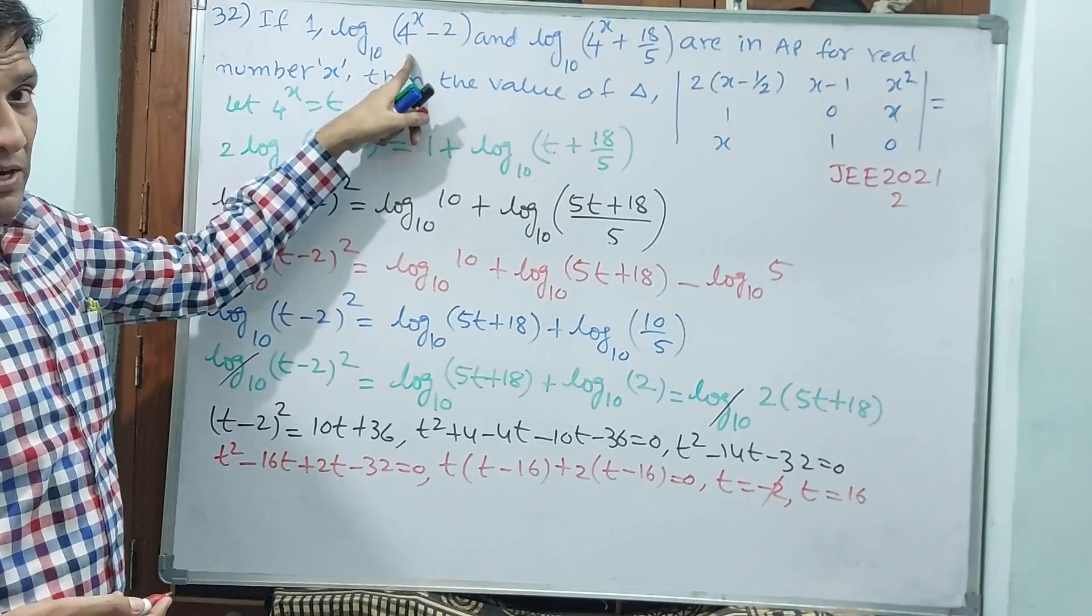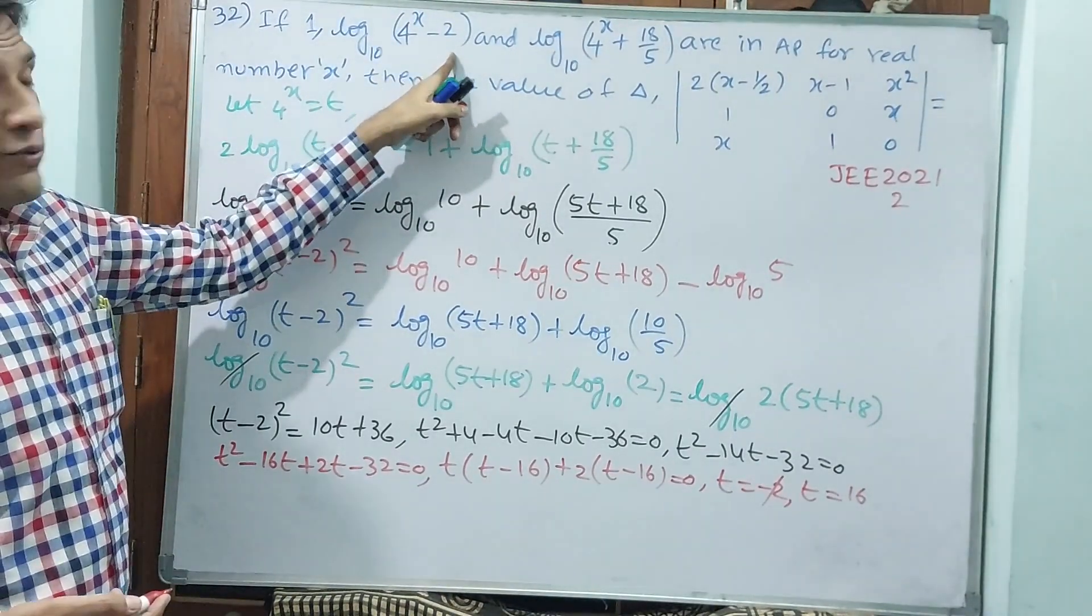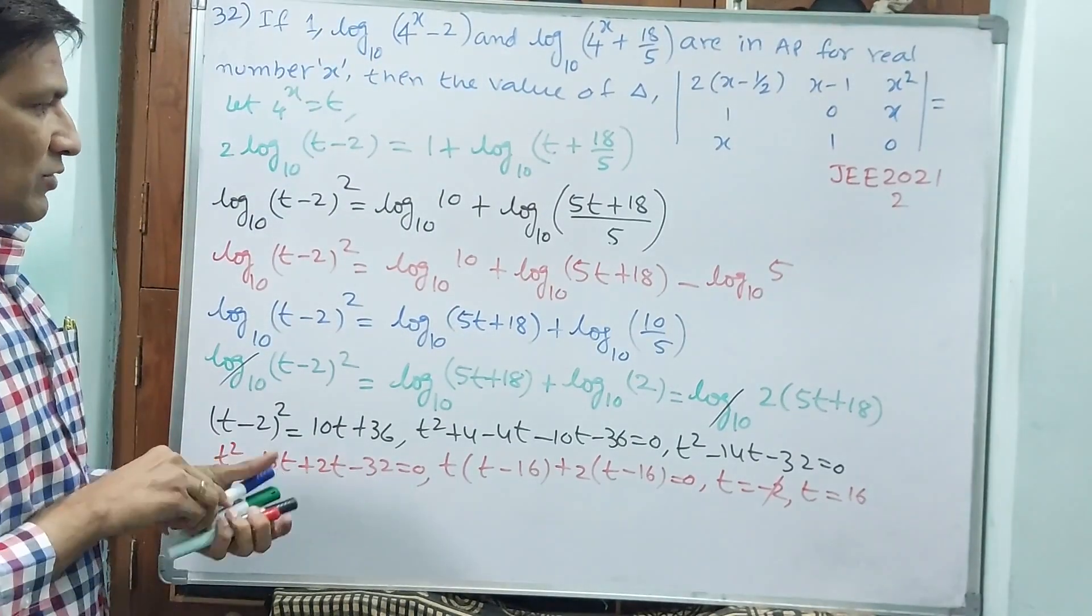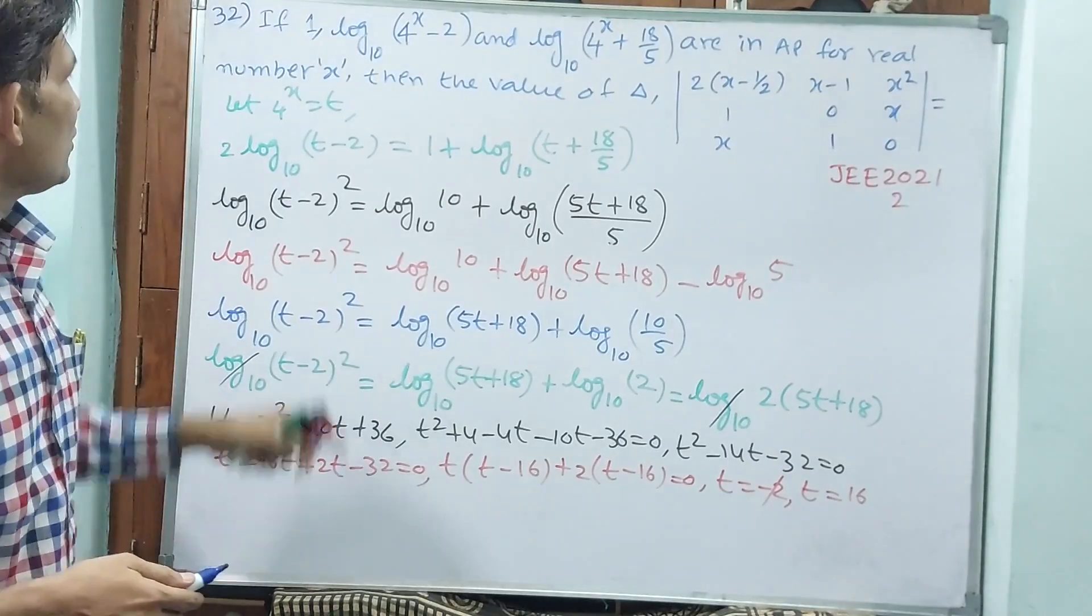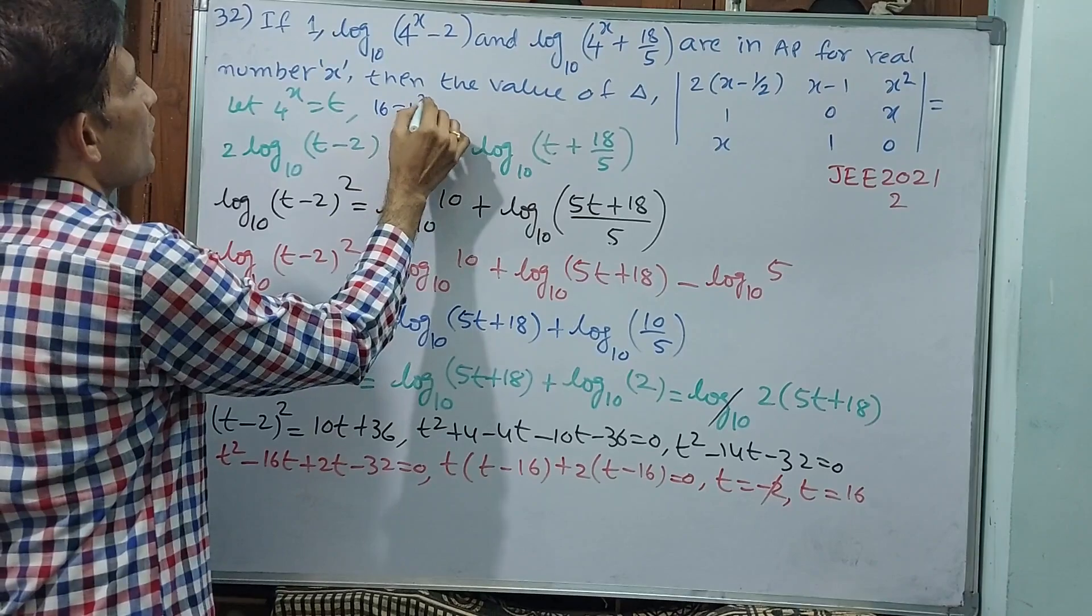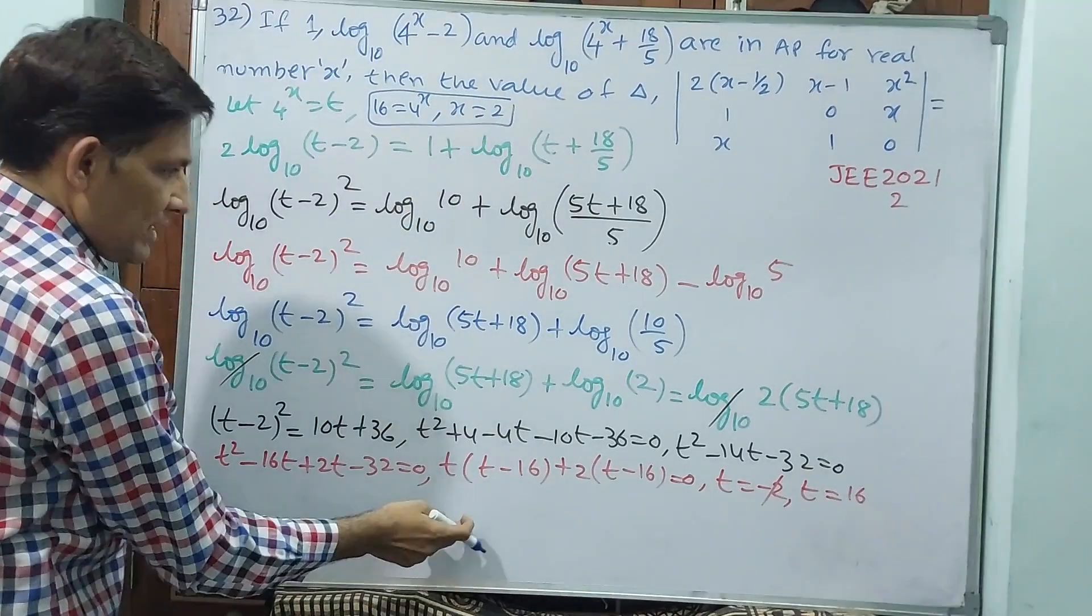Then you do: t = 16. When t = 16, I am writing here 16 = 4^x, means x will be 2. Actually this I have right here, but I don't have space. Okay, now directly I am taking x = 2 and I am doing this determinant.